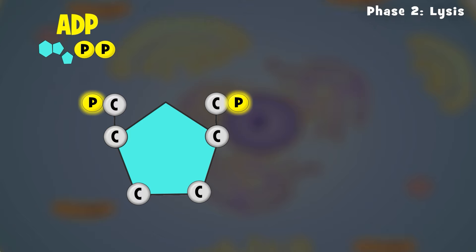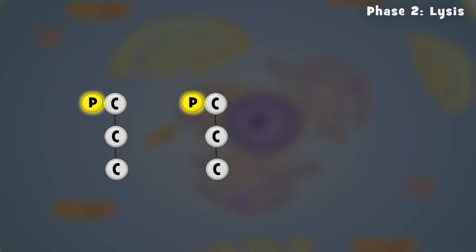Phase 2: Lysis. During this phase, the 6-carbon sugar is broken in half to make two 3-carbon molecules. Remember, lysis means breakdown or splitting, so this makes sense.